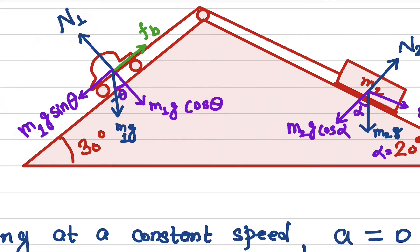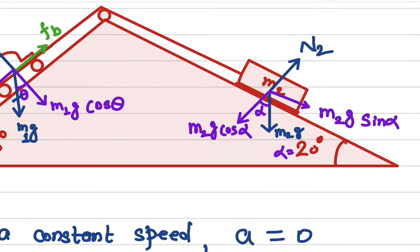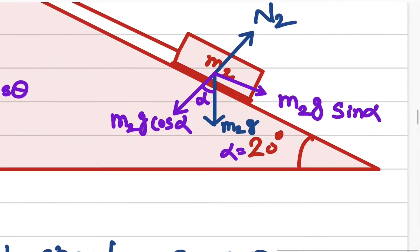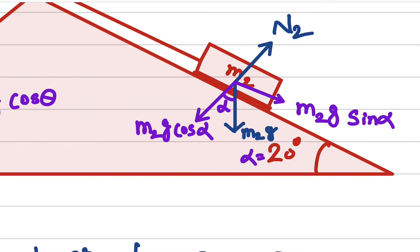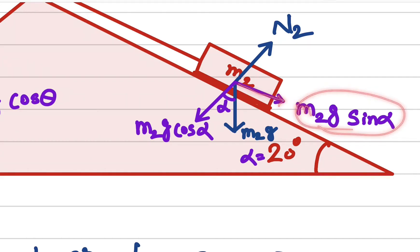Now let's draw the free body diagram of the mass as well — exactly the same process. The weight acts downward, which is m2g. Since this angle is alpha, the perpendicular component is m2g cosine alpha and the component parallel to the surface is m2g sine alpha.